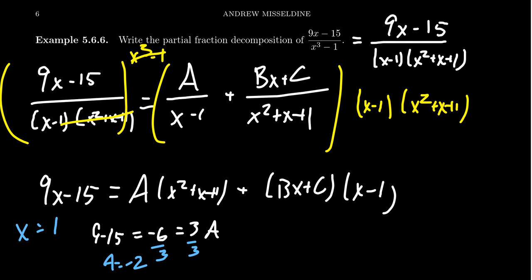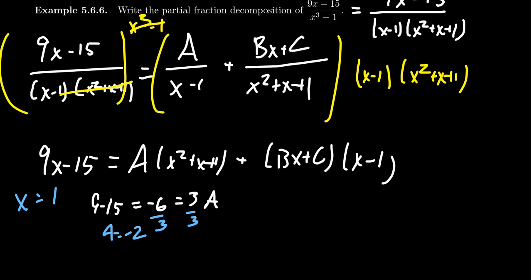But what do you do about the B and the C? What do you plug into x squared plus x plus 1 to cancel it out? Those actually have to be non-real complex numbers. So if we want to do arithmetic with complex numbers, we could do that. Or we're going to take the following approach.